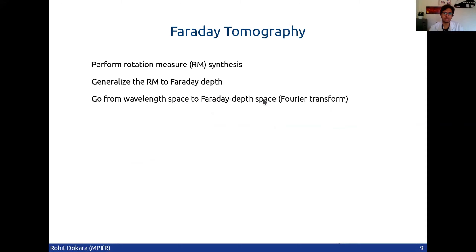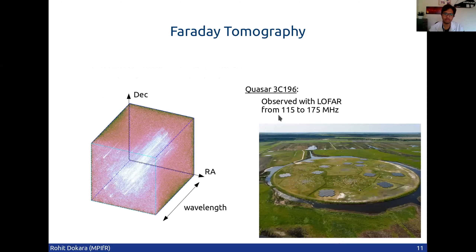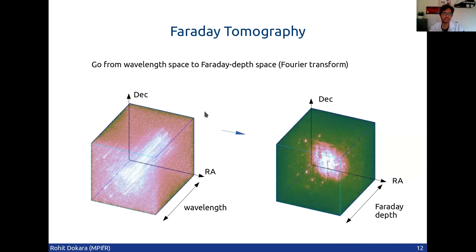So how do we disentangle different emissions coming from different parts of the interstellar medium? What we do is known as Faraday tomography. We perform a rotation measure synthesis, which is done by generalizing the rotation measure to a new quantity called Faraday depth. Then we go from wavelength space to Faraday depth space. We have data from LOFAR at very low frequency, and this is the polarized intensity cube. On the y-axis you have declination, x-axis RA, and on the z-axis we have wavelength or frequency. We do a Fourier transform of this to go from wavelength space to Faraday depth space, which is quite similar to what we use in spectroscopy.